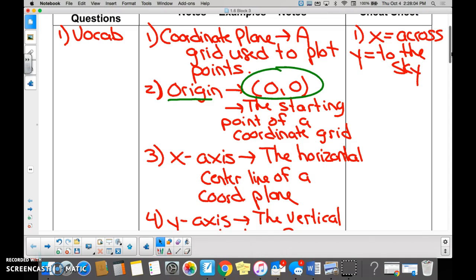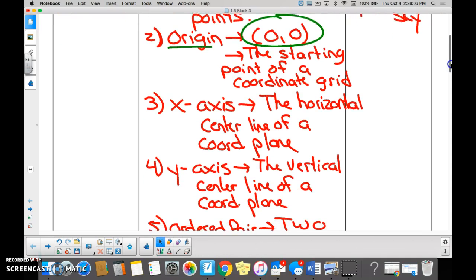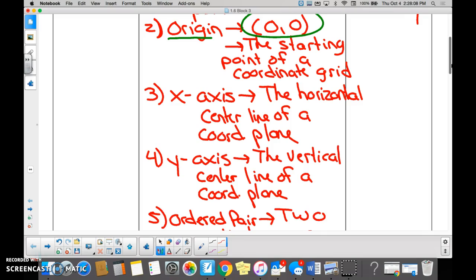Okay, so when we're at zero, zero, and we need to graph a point on a coordinate grid, what axes do we start with? The X or the Y? X. So we basically go right or left because the X is the horizontal, right? Yes. Okay, then after we go right or left from the origin, we go what? The Y-axis. The Y-axis runs which direction? Up and down.